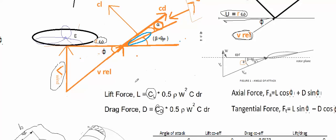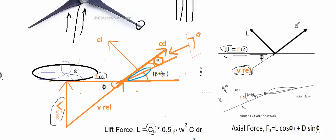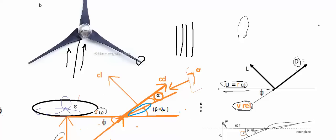We have a force parallel to the relative wind velocity direction — this is the drag force. The drag force equals half times the drag coefficient times the density times the relative velocity squared times the area C times B. Now, regarding the lift force — when wind flows over the blade element and we change the angle, a lift force is generated.